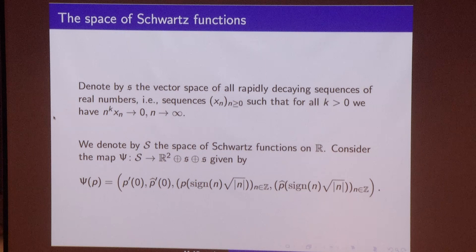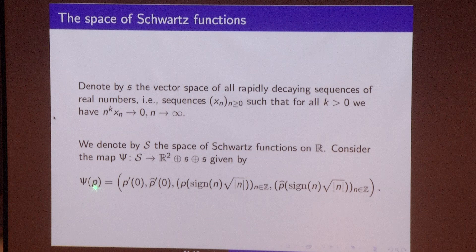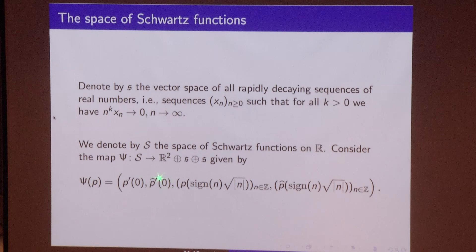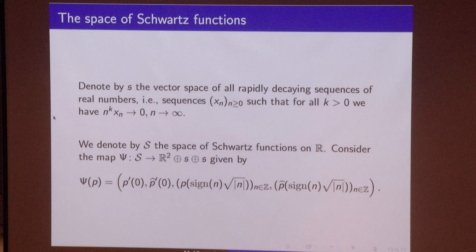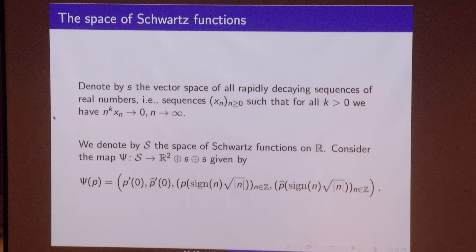We have the following map from the space of Schwarz functions to the space of such sequences. If we have one function, we will map it into discrete data: the derivative of the function at zero, the derivative of its Fourier transform at zero, the vector of values of this function at all square roots of integers and their negatives, and the same information about its Fourier transform. Our previous theorem tells us that this map is almost an isomorphism.